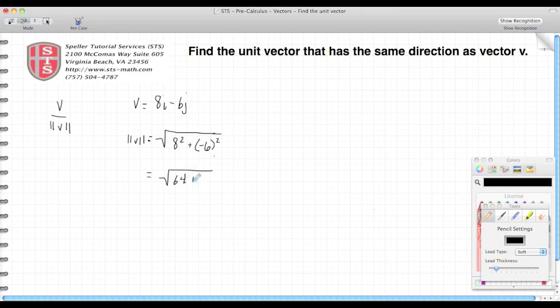64 plus 36. That becomes 100, and the square root of 100 is 10.